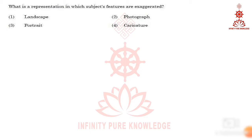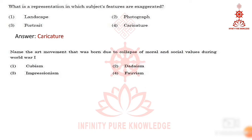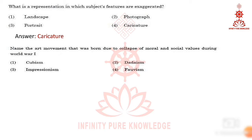Seventh question: what is a representation in which subject features are exaggerated? The answer is caricature. Question number eight: name the art movement that was born due to collapse of moral and social values during World War One. The answer is Dadaism.